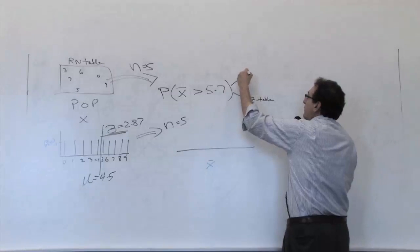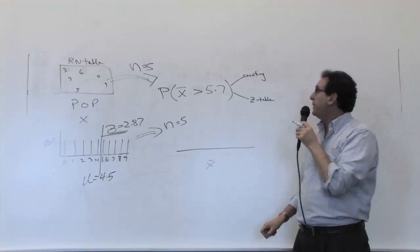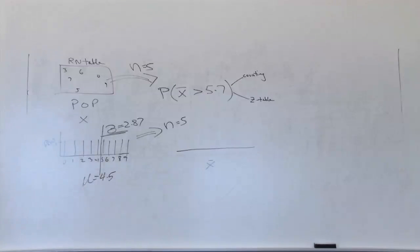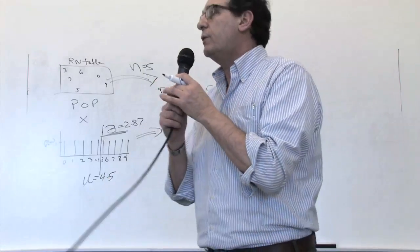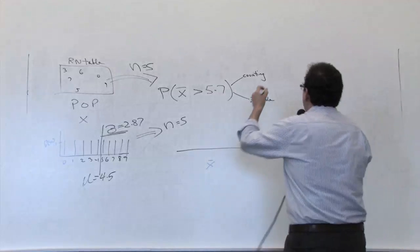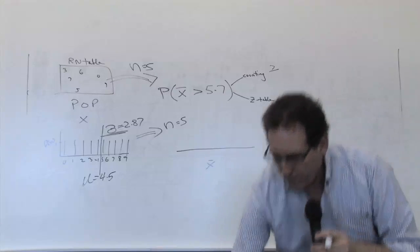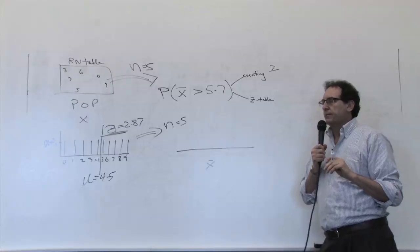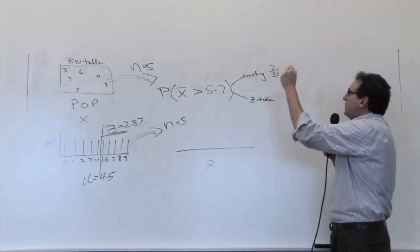But there's an easier way of doing it, easier if you're good with computers, and that is by counting. If you go down your list of 1,000 x-bars and count, how many are bigger than 5.7? 5.8 is 7 out of how many? 7 out of 35. Okay. So what is that as a percentage?